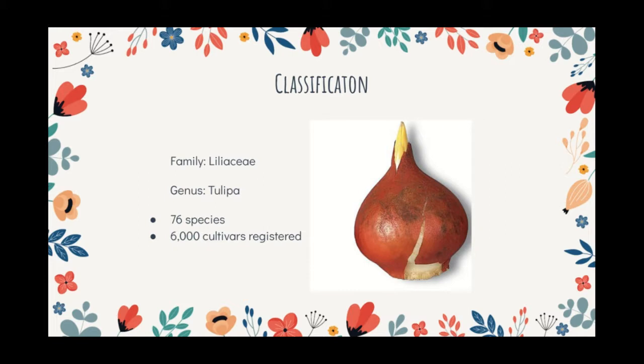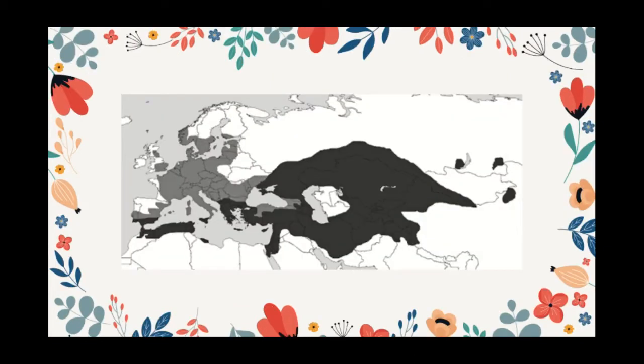Tulips are also one of the largest families of monocots and plants. Polyploidy is common in tulips and can be found in native populations. This is a distribution map of tulips — the dark gray areas are the native ranges and the light gray areas are the naturalized range of the tulips.